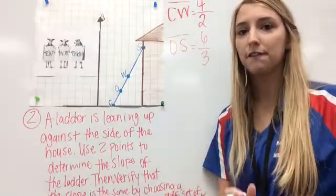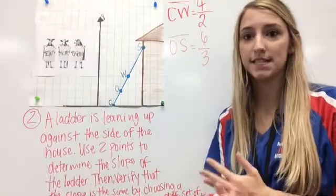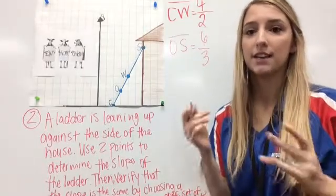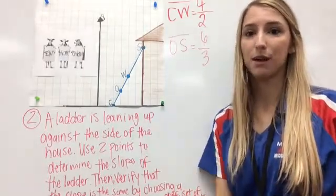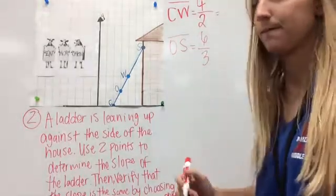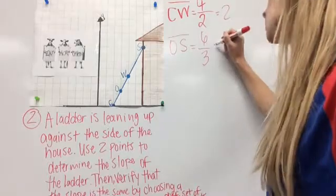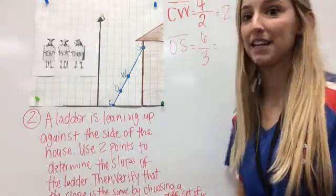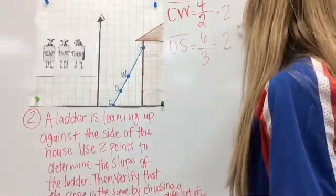Now, I'm trying to verify that these two are the same. Since it's a line, again, it should have the same slope consistently throughout the whole line. So, what is 4 divided by 2? 2. What is 6 divided by 3? It's also 2. So, this does work.